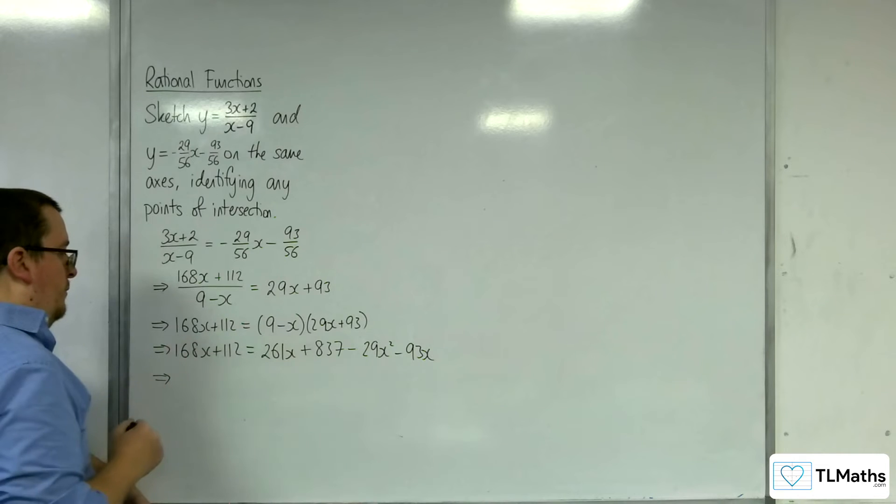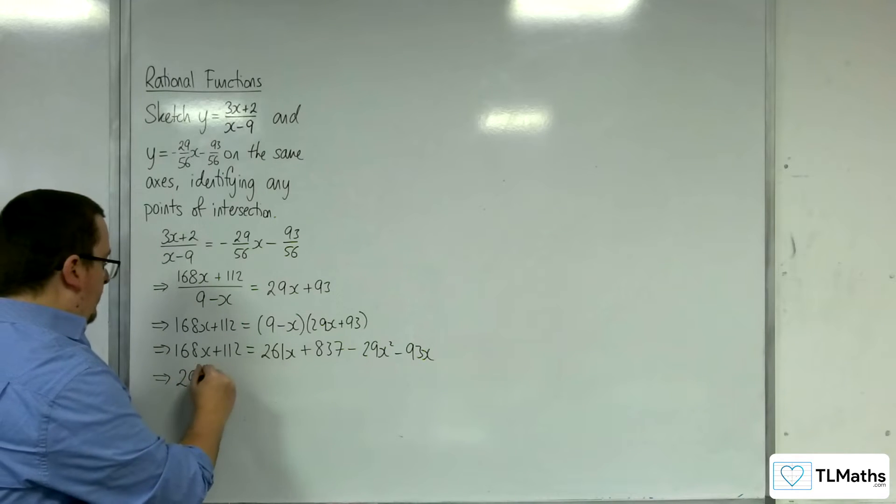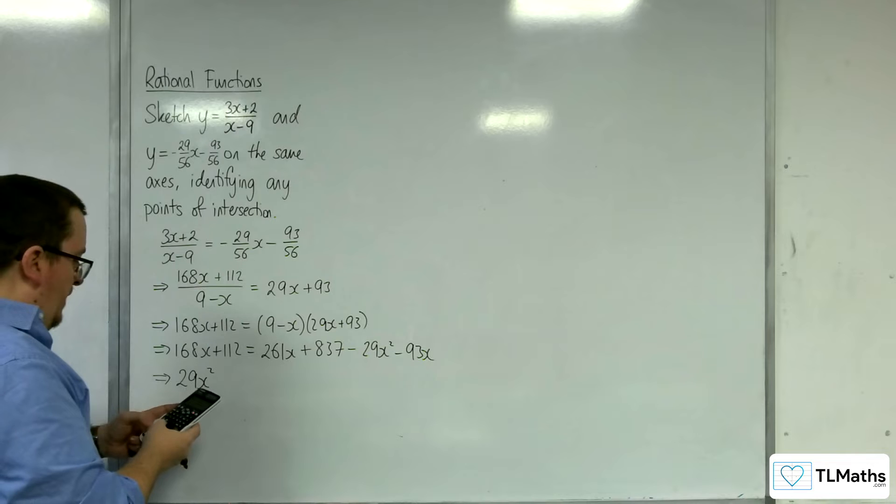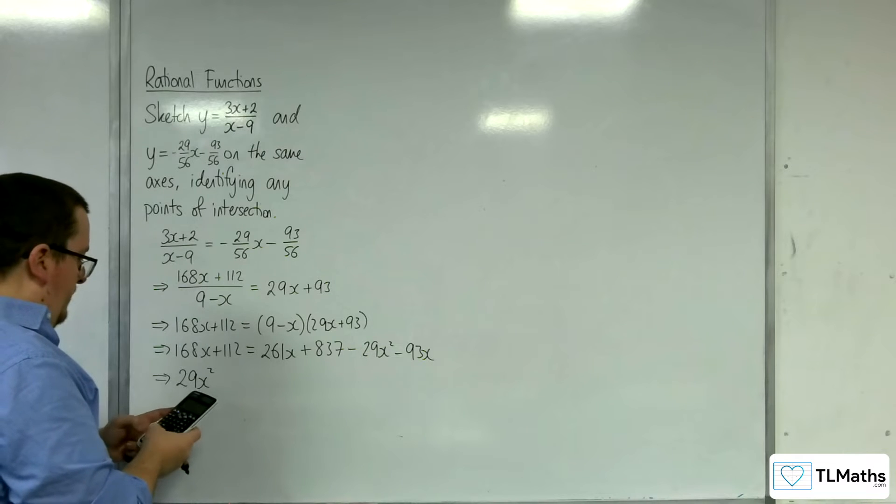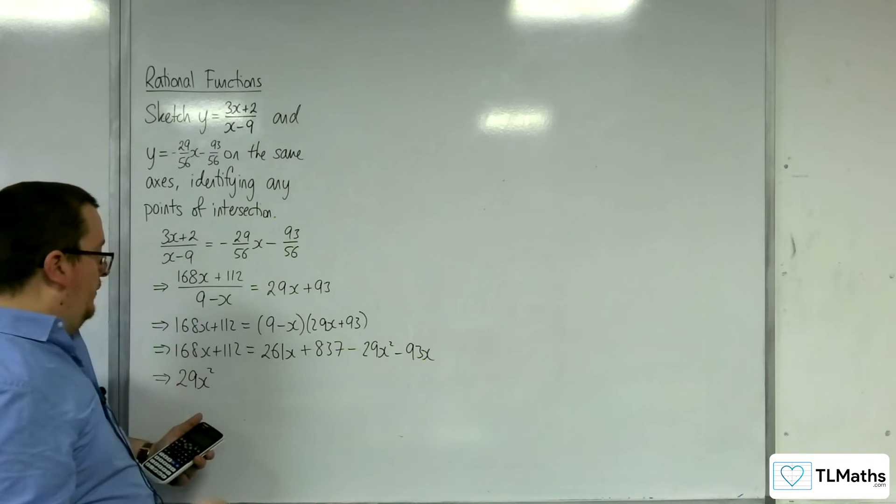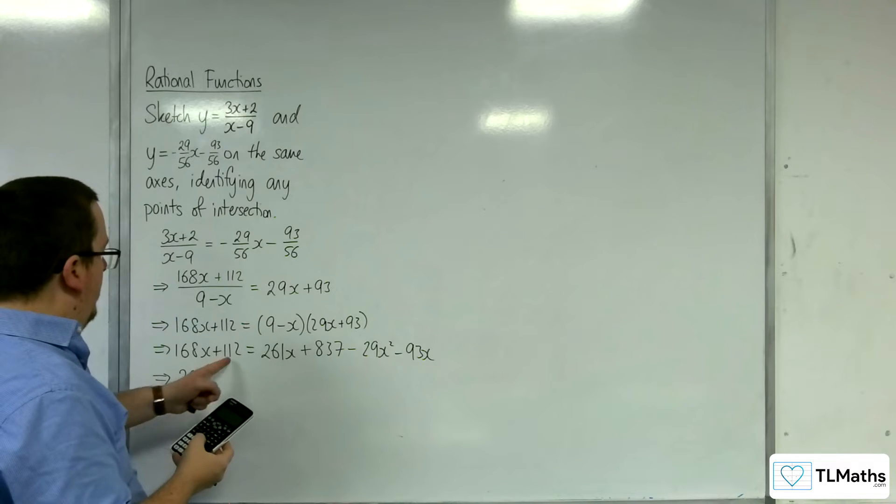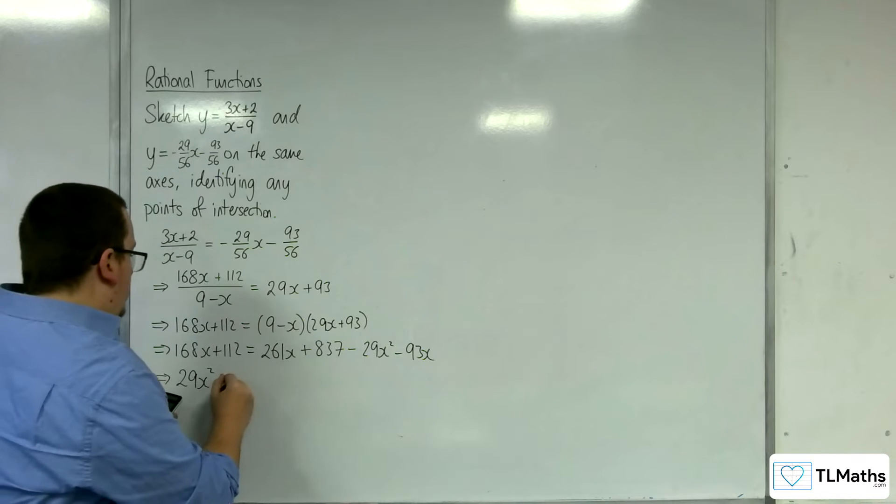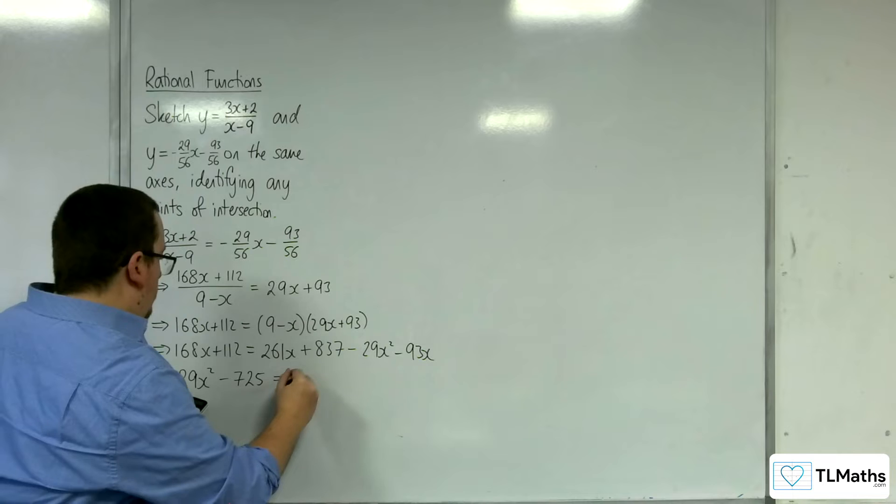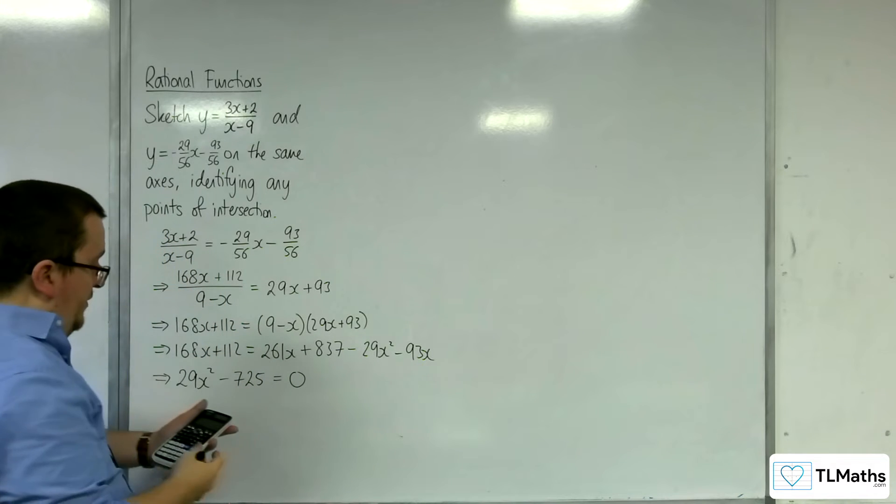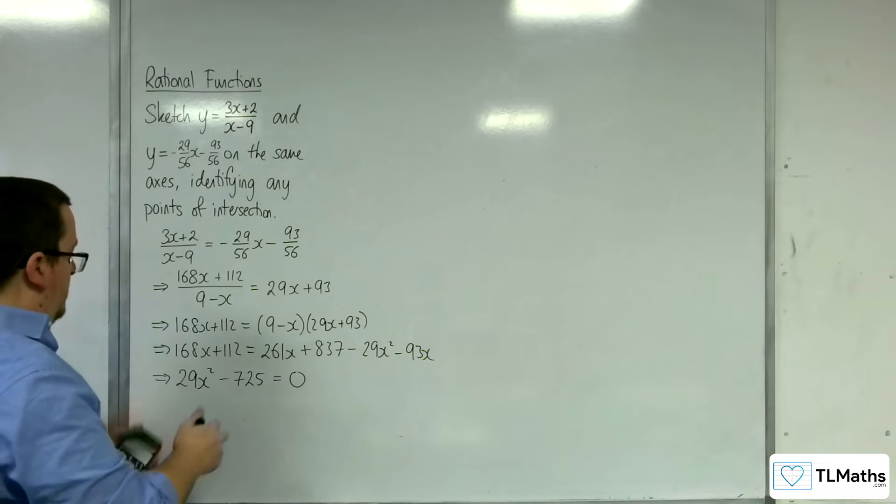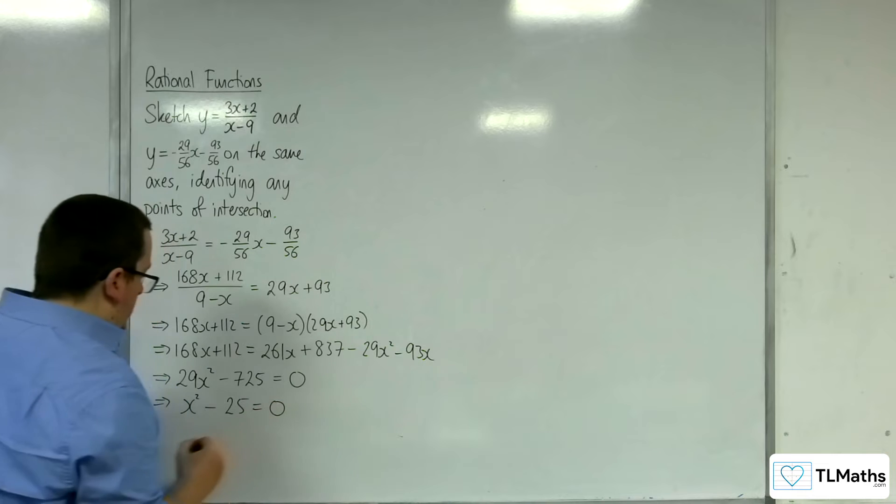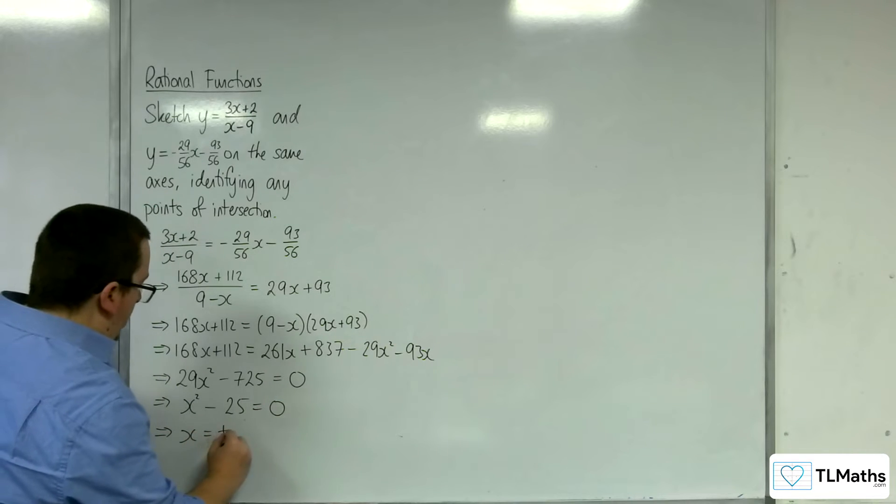I'm going to have to move everything onto the left-hand side, so 29x squared. I've got the 168x there. I'm going to take away 261 and add 93. So that gets me 0x, which is convenient. And then I've got 112 take away 837, which is take away 725 equals 0. Let's divide that by 29, and we get minus 25. So x squared take away 25 is 0. So that means that x is plus or minus 5.